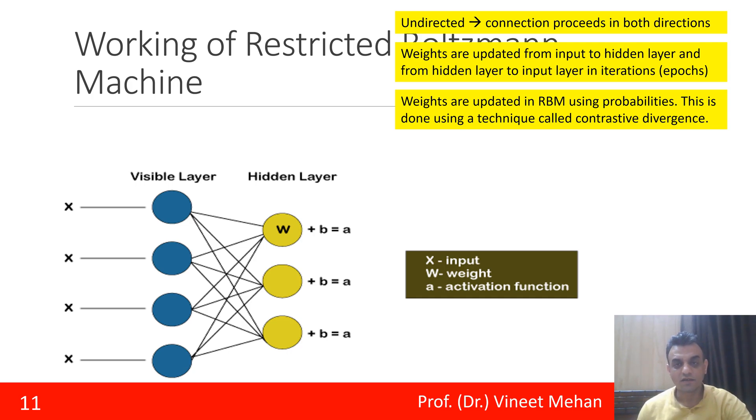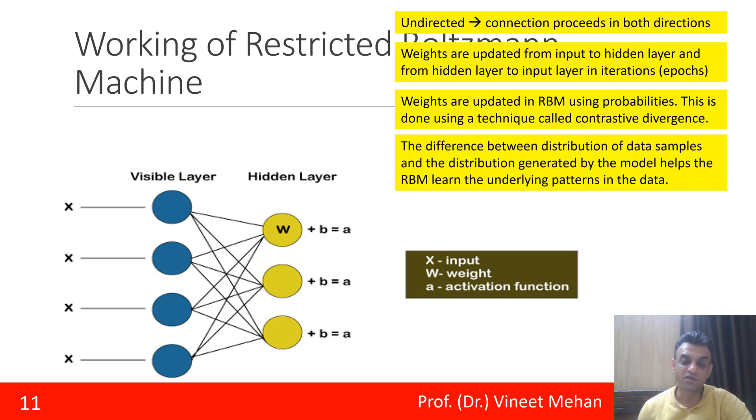Weights are updated in RBM using probabilities, and this principle is called contrastive divergence. There is this word 'contrastive,' which means we need to compare. Comparison is done between distribution of the data samples and the distribution of the generated model.